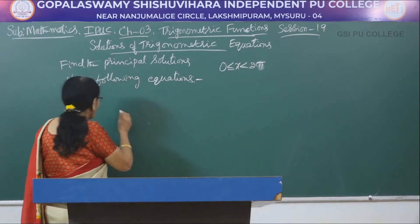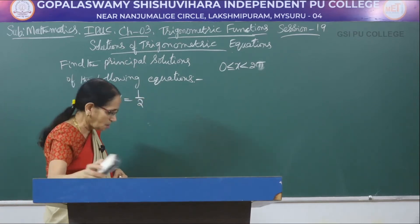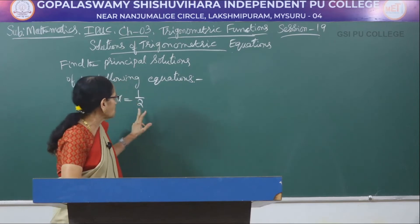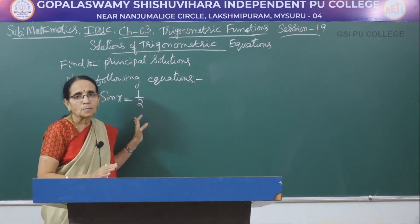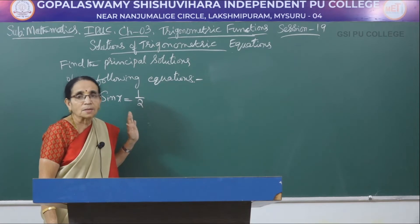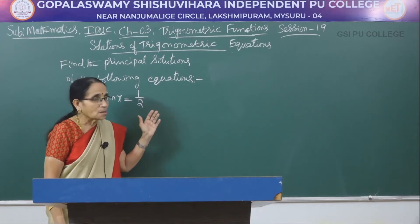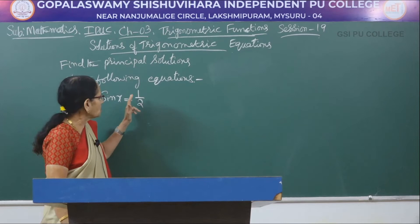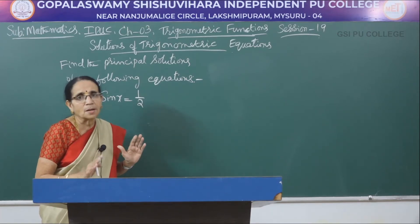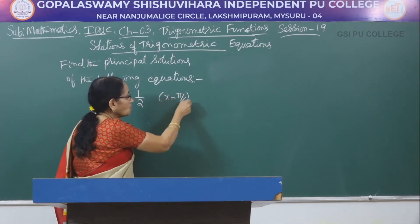Let me take the first equation: sin x = 1/2. Whether the value is negative or positive, first look at the numerical value and remember the corresponding angle — pi by 6 in radians. Write answers in radians only; that is how the answer is expected. So you can note that the standard angle corresponding to 1/2 is x = pi/6.